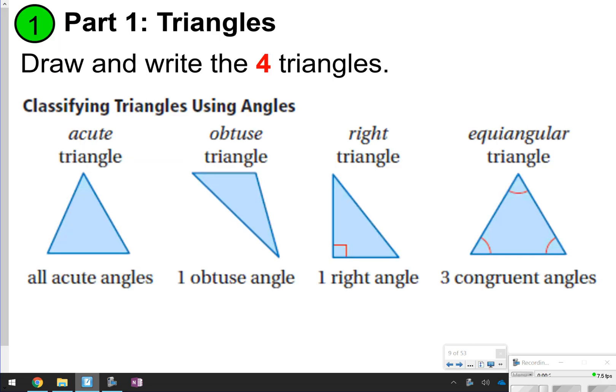First thing you're going to draw in your notes and label are these four triangles. You're classifying the triangles using angles. Acute triangles have all acute angles, meaning all angles are less than 90 degrees. An obtuse triangle has one obtuse angle, one angle greater than 90 degrees. A right triangle has just one angle equivalent to 90 degrees.